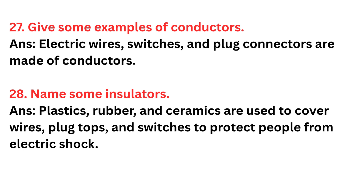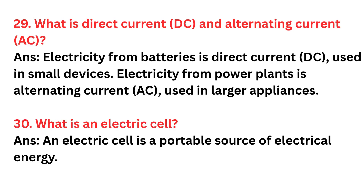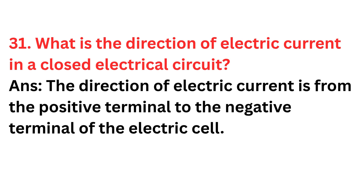Question twenty-nine: What is direct current and alternating current? Answer: Electricity from batteries is direct current (DC), used in small devices. Electricity from power plants is alternating current (AC), used in larger appliances. Question thirty: What is an electric cell? Answer: An electric cell is a portable source of electrical energy. Question thirty-one: What is the direction of electric current in a closed electrical circuit? Answer: The direction of electric current is from the positive terminal to the negative terminal of the electric cell.